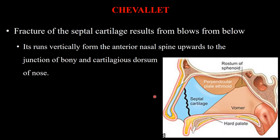The Chevalet fracture results from blows from below. The fracture line runs vertically from the anterior nasal spine upwards towards the junction of the bony and cartilaginous dorsum of the nose — running from the nasal spine up to the bony-cartilaginous junction of the dorsum, which is the area visible from the front.